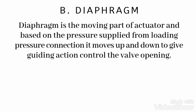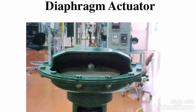The diaphragm is the moving part of the actuator. Based on the pressure supplied from the loading pressure connection, it moves up and down to provide guiding action and control the valve opening. Here you can see a physical diaphragm inside the diaphragm casing, which is connected with the stem and fixed with a nut.